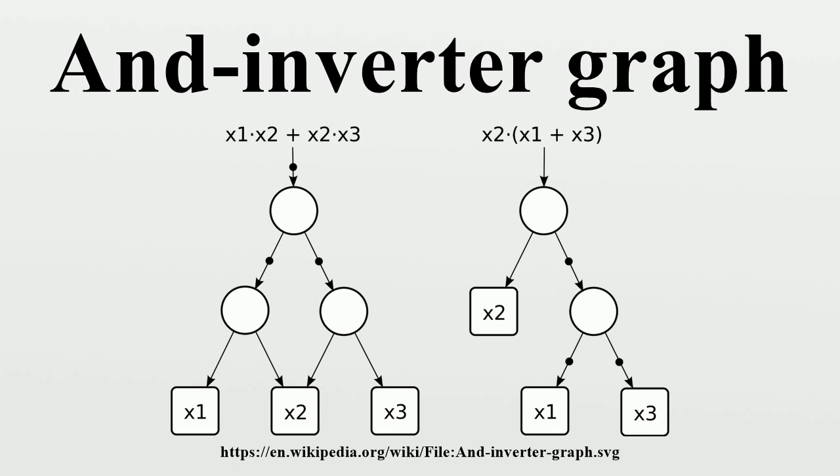This makes the AIG an efficient representation in comparison with either the binary decision diagram or the sum of products form, that is, the canonical form in Boolean algebra known as the disjunctive normal form.